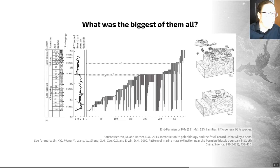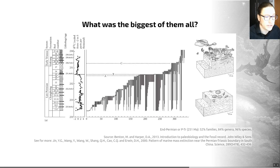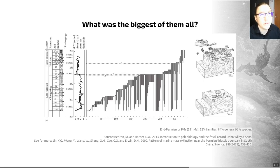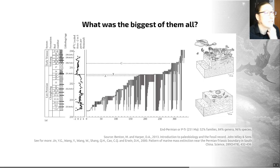So that was the end of the Devonian. Let's move on to the Permo-Triassic extinction. This is the biggest of them all. This happened about 251 million years ago, and probably 52% of families of organisms and up to 96% of all species went extinct. It's a really, really big event.